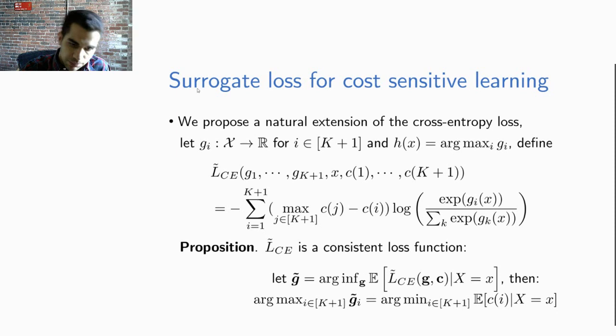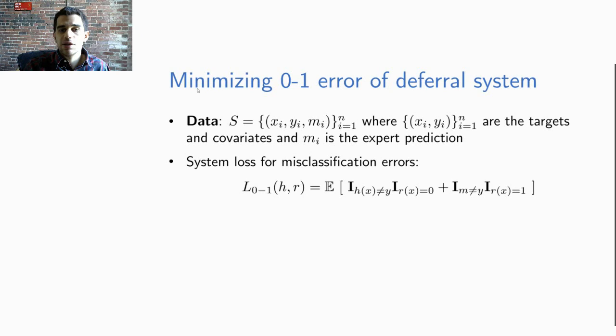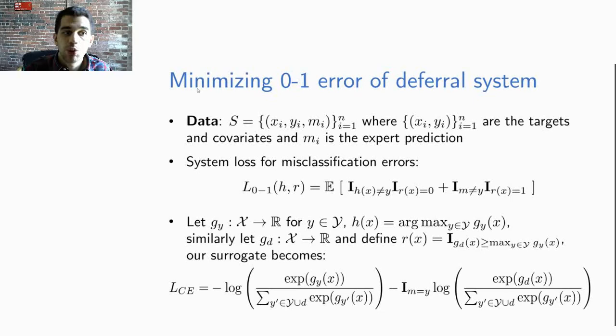So let us return to our deferral setting. We will assume that we have data of the target Y, covariate X as well as expert predictions m_i for each sample in our dataset. We make the simplest realization of classifier and expert cost as the misclassification error of the target. The objective is to learn a classifier and a rejector in order to achieve the smallest zero one error for the combined system. This is denoted in the loss L_{0,1} which is simply the misclassification error of the combined system.